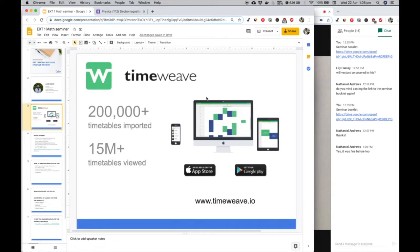TimeWeave is an app for university students, mostly in Sydney and Melbourne. It automatically imports your timetable, you can add your friends, find common breaks. We're actually doing pretty well. If you're interested in startups, you can chat to me about that later as well.